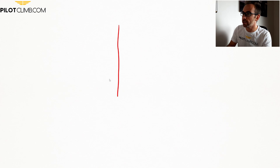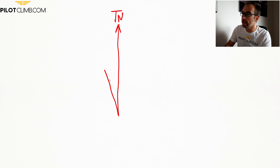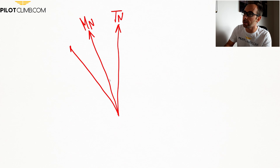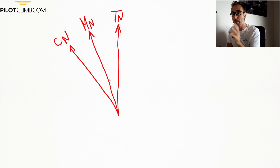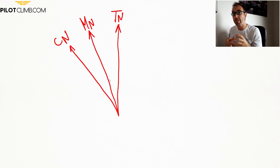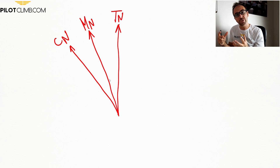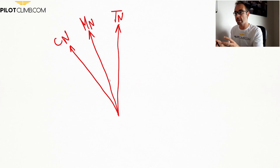So if I draw in here the true north — TN — then we can write down the magnetic north — MN — and in here the compass north. Now you understand why we've got these three different norths. Very important: the magnetic north in this is just an example because the magnetic north is not a fixed value — it changes from place to place and throughout the year. But the target of today's video is to understand why the compass heading is different compared to the magnetic heading and the true heading.